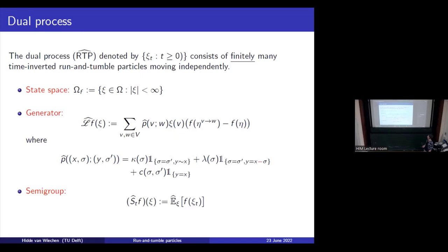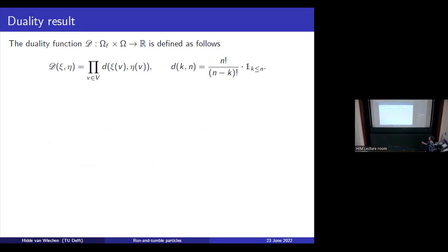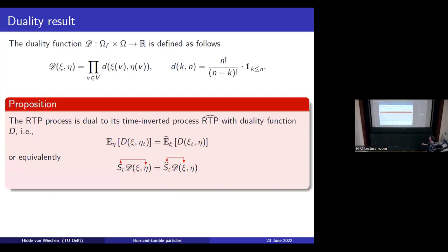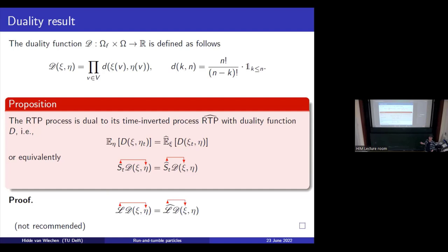For a duality result, we need the duality function. This will be exactly the product of the falling factorials — we've already seen this come by a couple of times in this workshop. There is a duality result written in semigroup terms where the arrows point at the process it works on. How do we prove this result? We can do it through generators, but I did this and do not recommend it — it took me about a week to get all the calculations right. We actually found a way better way to prove this, but I can just say that it does work.